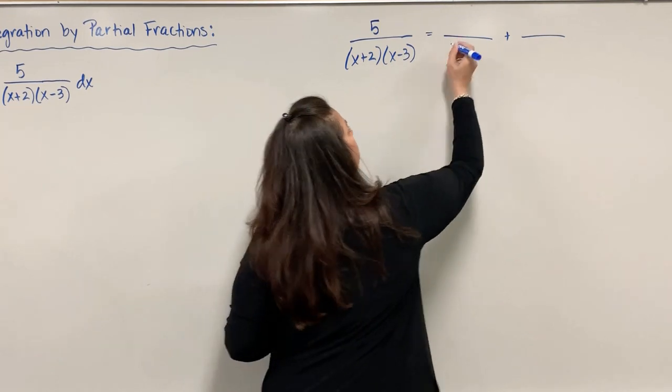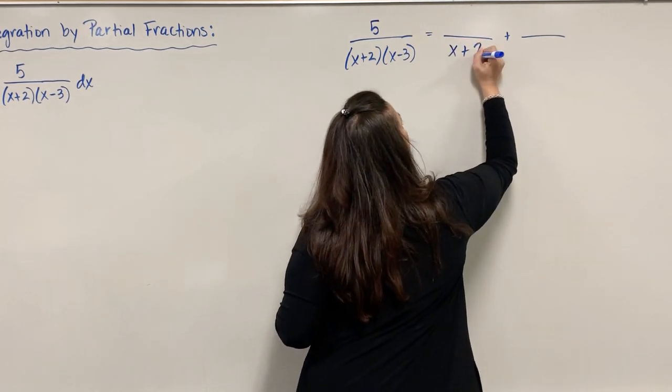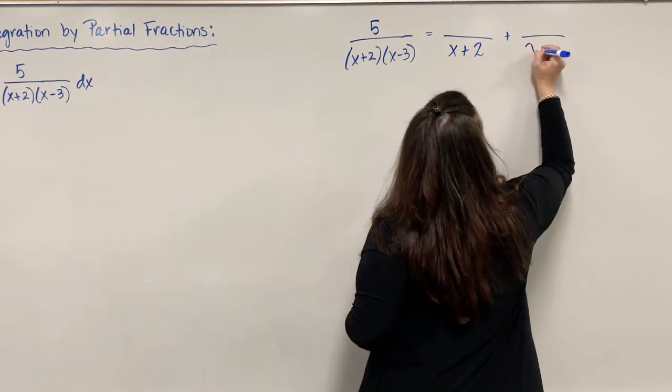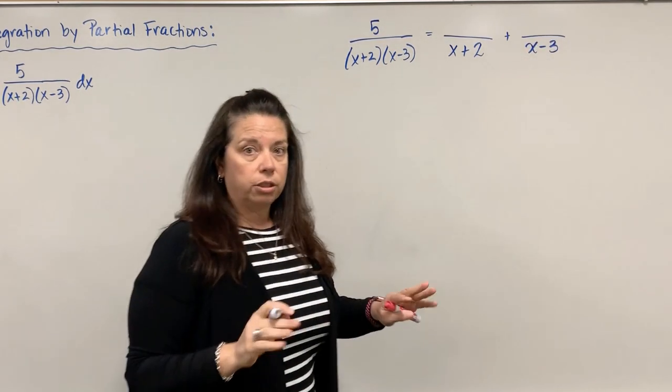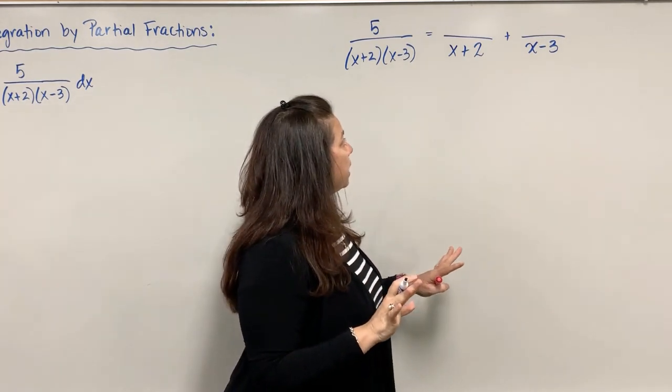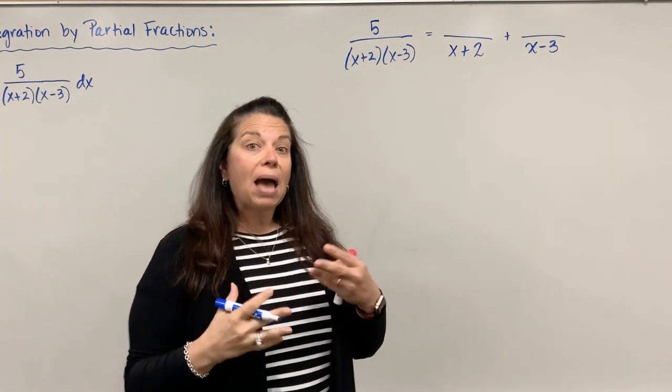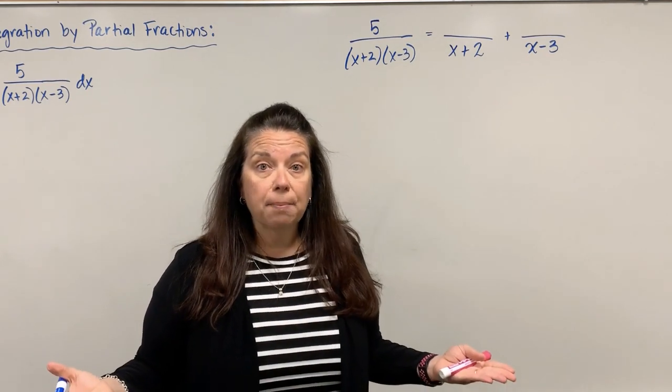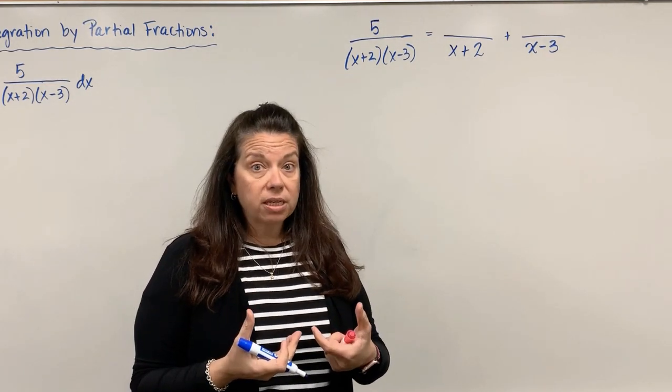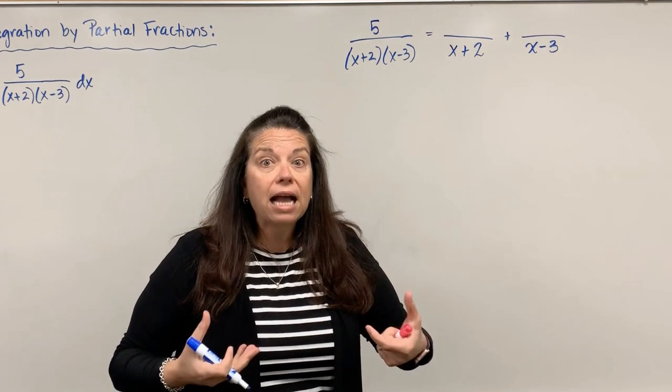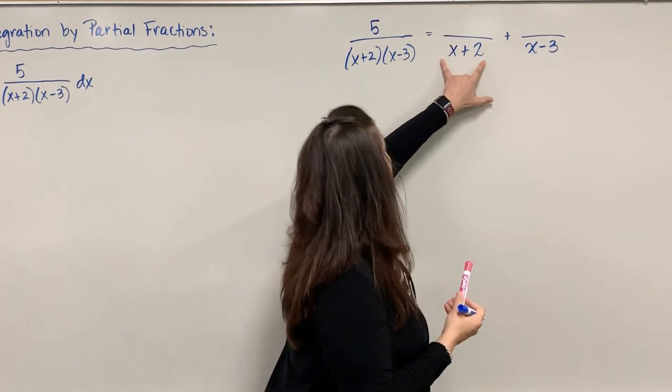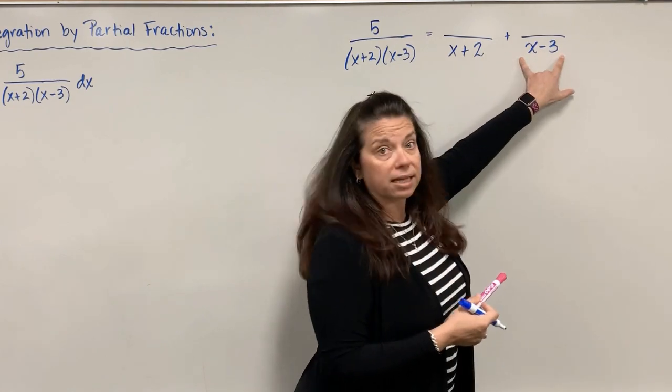I do know that whatever my denominators are, when I get a common denominator from these two individual fractions, they need to create this one denominator of (x+2)(x-3). So I'll make one denominator x+2 and the other x-3.